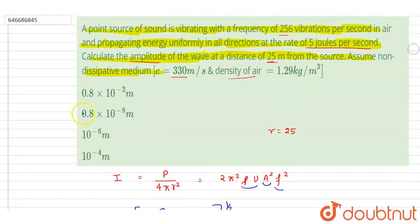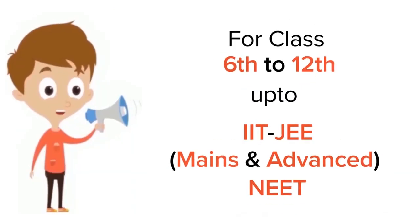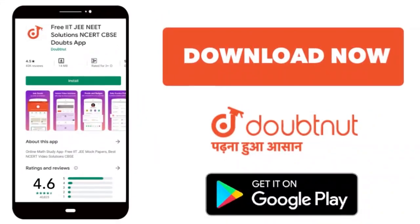Now you can check for the option here. C is the correct answer. Thank you. For class 6-12, IIT, and NEET level, trusted by more than 5 crore students, download Doubtnut app today.